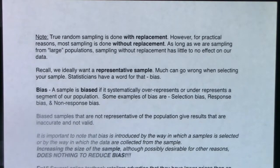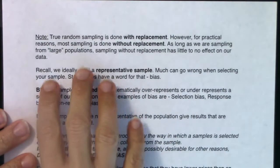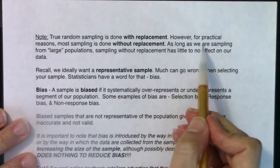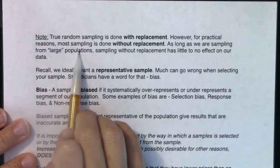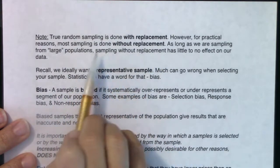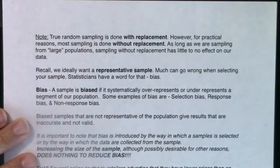There is a rule that lets us get away with this, that we'll talk about more in Chapter 8. So as long as we are sampling from large populations, sampling without replacement has little to no effect on our data.